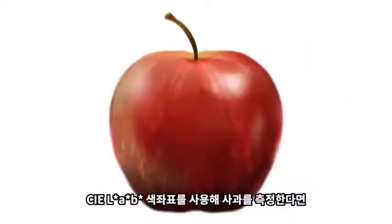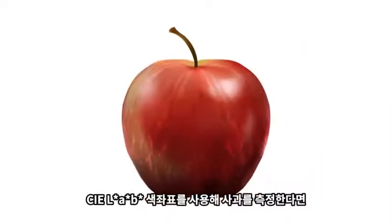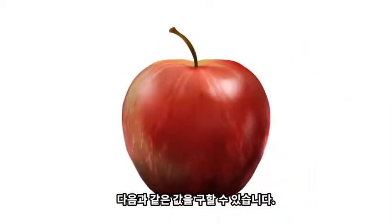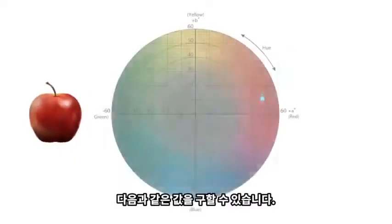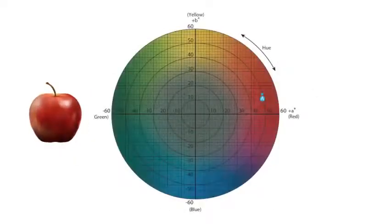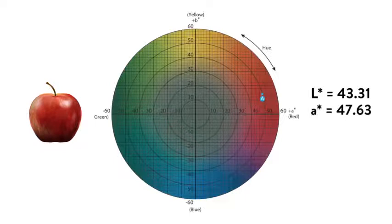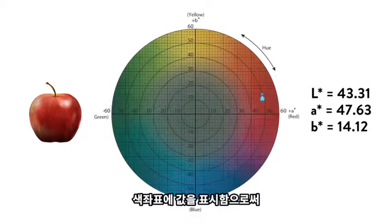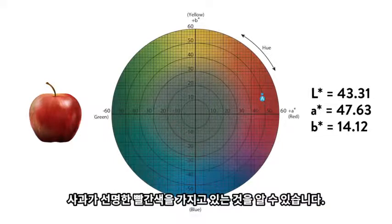If we measure an apple using the CIE LAB color space, we will obtain the following values: L* equals 43.31, A* equals 47.63. By plotting the values on the color space, we can see that the apple has a vivid color with a red hue.